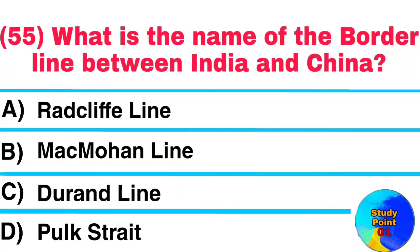Question No. 55. What is the name of the borderline between India and China? Answer: McMahon Line.